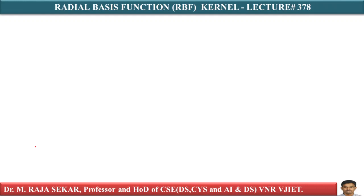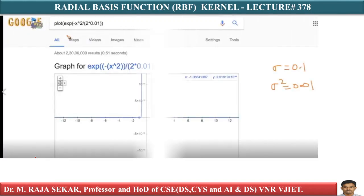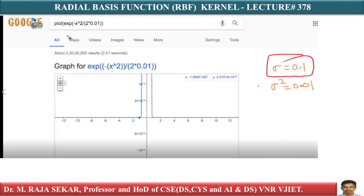Welcome to Raj Shaker Classes on Applied Data Science with Python. This is lecture number 378. In this lecture I will continue my discussion on RBF kernel. Before understanding this lecture I request you to go through my previous lecture, that is lecture number 377. Let's assume sigma equal to 0.1; what is sigma square? Sigma square equal to 0.01.